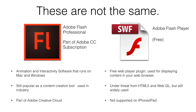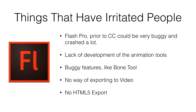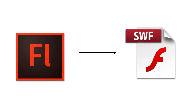Adobe Flash Player is just a plugin — a really small program that works exclusively in your web browser. Things that have irritated people about Flash Pro: prior to CC, it could be very buggy and tended to crash a lot. There wasn't much development in the animation tools, particularly since Adobe took it on. They introduced buggy features like the bone tool, which they've now removed. There was no way of exporting to video, so animators got quite frustrated. And prior to a couple of years ago, there was no export to HTML5, which is currently becoming the most popular way of creating interactive, rich content websites. In the past, Flash Professional only really exported to Flash Player files.